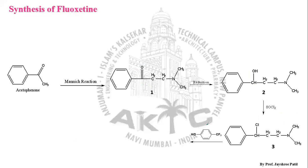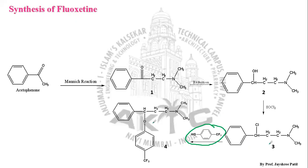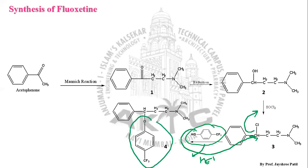Structure 3 is then reacted with para-trifluoromethyl phenol. This compound is needed as a side chain in the final structure of fluoxetine. The OH group of para-trifluoromethyl phenol attacks Structure 3, and with the loss of HCl, the trifluoromethylphenoxy moiety is introduced into the parent chain, giving Structure 4.